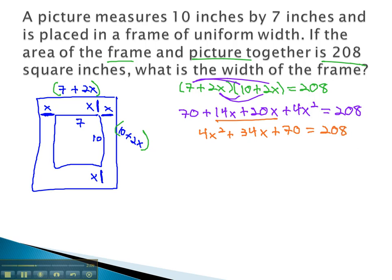In order to solve, we want the equation to equal 0, so we will subtract 208 from both sides. This gives us 4x squared plus 34x minus 138 equals 0.